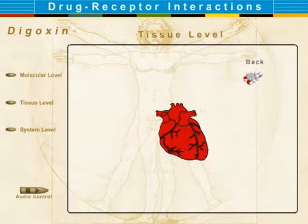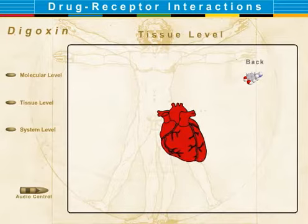This results in decreasing preload and increasing the ejection fraction. The decrease in rate is termed negative chronotropy.